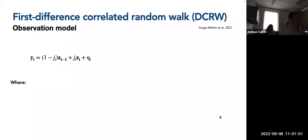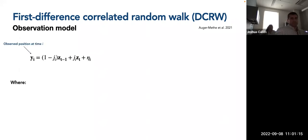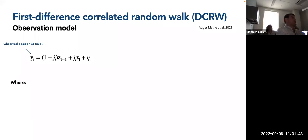Now the observation model — connecting the true states to what we observed in the track. Y sub i (bolded, a vector) is our observed position at time i. We use i instead of t for observed positions because we don't always observe locations at the exact same time as our underlying process. We need to account for this timing difference. The variable j sub i represents the proportion of the regular time interval between t-minus-1 and t, accounting for the difference between observed and true position timing.